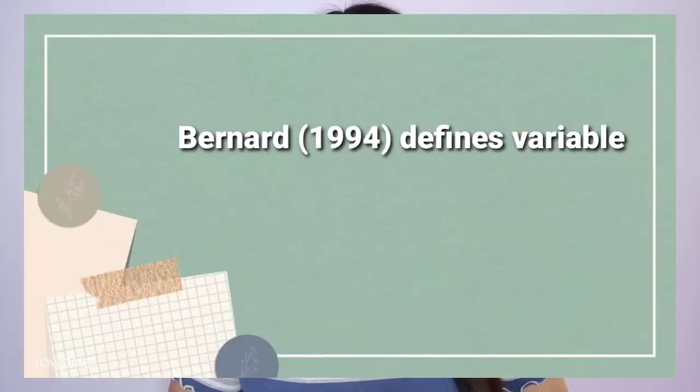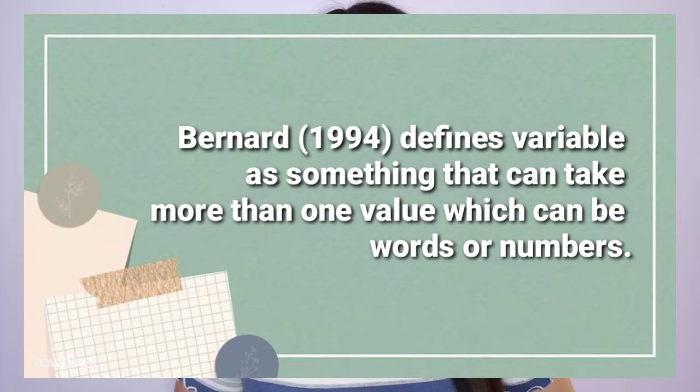Without much ado, let's get the ball rolling! First, let us define variables. Variables can be words like sex, male or female, occupation, mode of transportation, school, educational attainment, among others. On the other hand, variables can also be expressed in numbers such as age, years in service, family monthly income, etc.